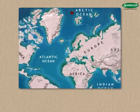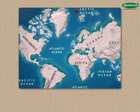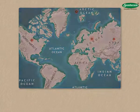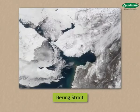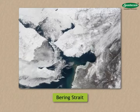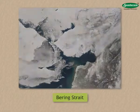The Arctic Ocean extends south up to the continents of North America, Europe and Asia. It is connected to the Pacific Ocean by the narrow Bering Strait. In winter, the water in this ocean is frozen, so for some time the continents of Asia and North America get connected.